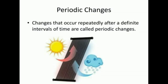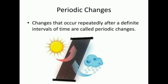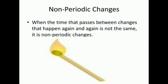We find that some changes occur again and again after a definite interval of time. Such changes are called periodic changes. On the other hand, it cannot be said for sure when certain changes will reoccur after one occurrence. Even if they reoccur, the time interval is not fixed. Such changes are called non-periodic changes. Non-periodic changes are changes in which the time interval is not fixed — they can occur anytime or may not occur at all.